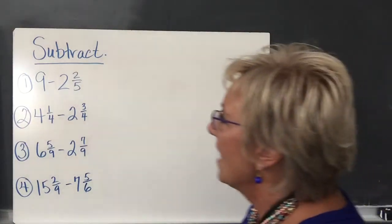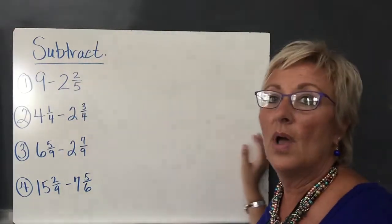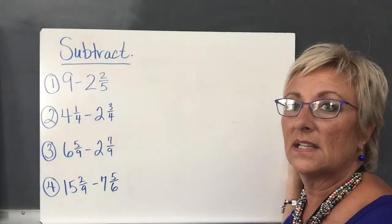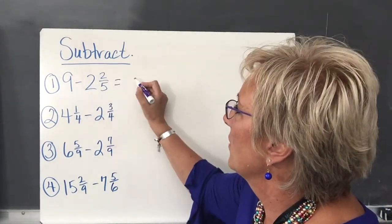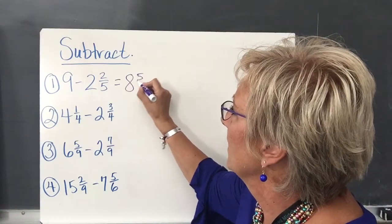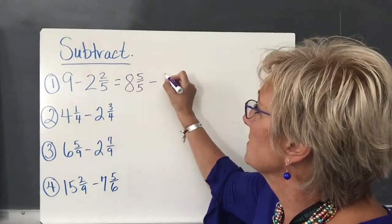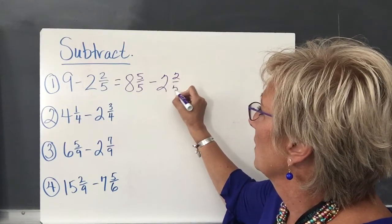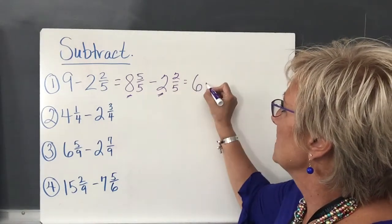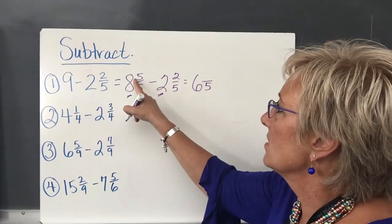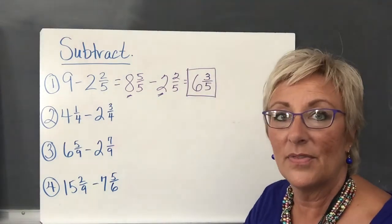Let's look at the subtraction problems. I have 9 minus 2 and 2/5. I'm going to rename 9 — since 5 is my denominator — as 8 and 5/5. I haven't changed the value; 8 and 5/5 is still 9. So: 8 and 5/5 minus 2 and 2/5. Subtracting whole numbers: 8 minus 2 is 6. My common denominator is 5, and 5 minus 2 is 3. So my answer in simplest form is 6 and 3/5.